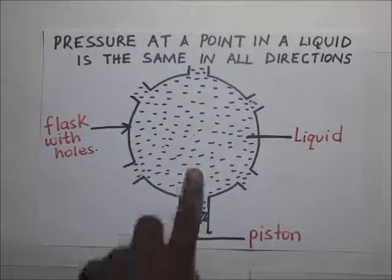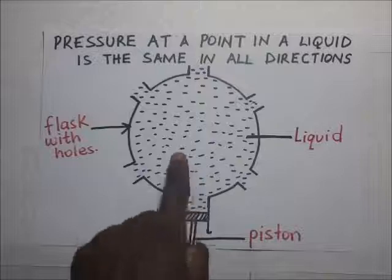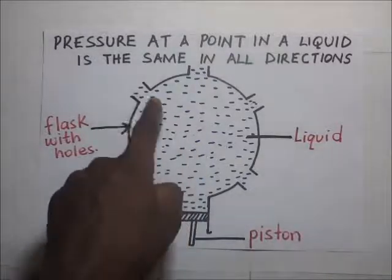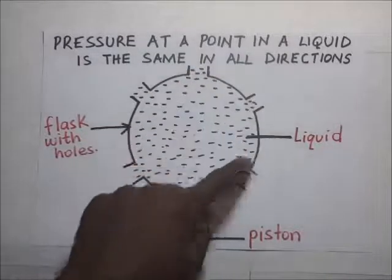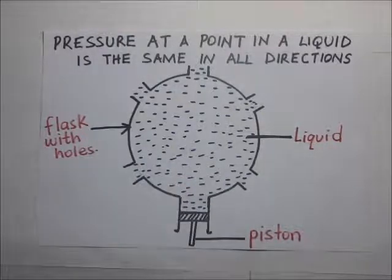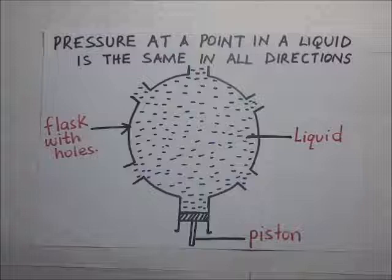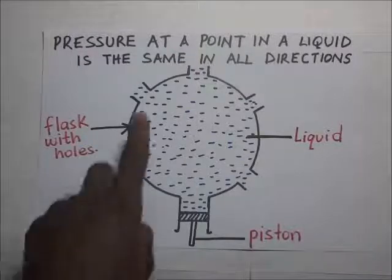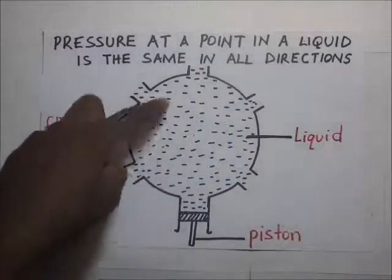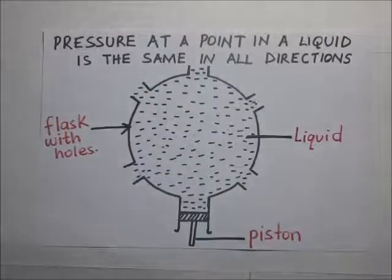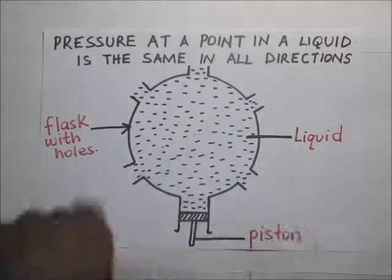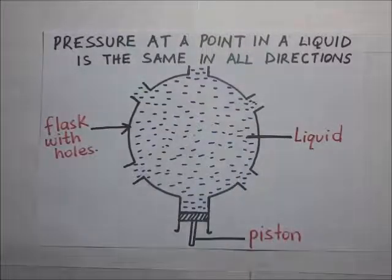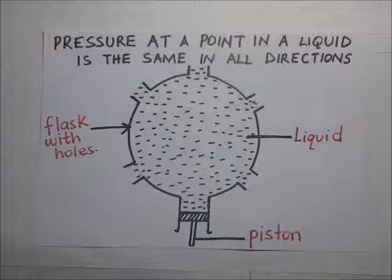When we push the piston inside, the pressure exerted on the liquid forces it out through the holes. The water shoots out through all of these holes in all directions with the same pressure, showing that pressure in liquids acts equally in all directions.